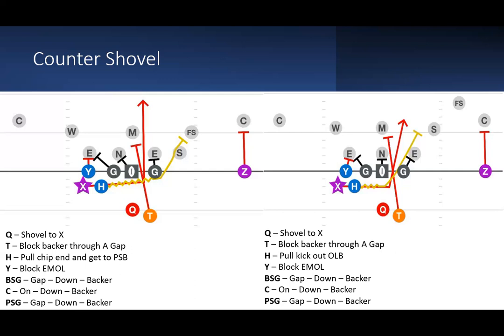Against the three-man front, this is the ideal front that we like to run against to give us more advantage in our opinion. Same deal—quarterback's going to shovel to the X, has the ability to run the backside if he wants, could also RPO the Z. The H is going to pull and he's going to go through the A gap behind the tailback and he's going to kick out that Sam linebacker.